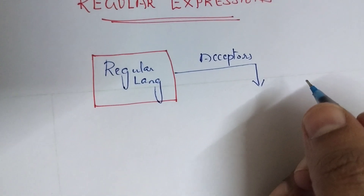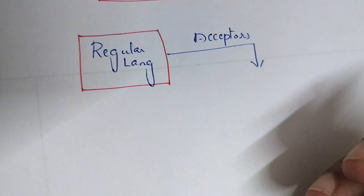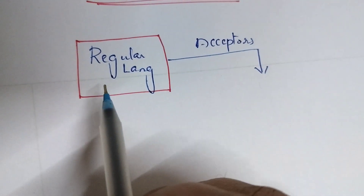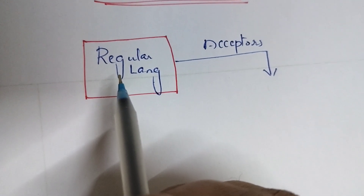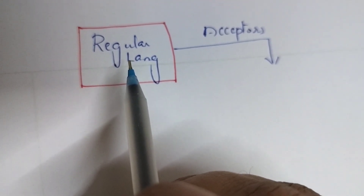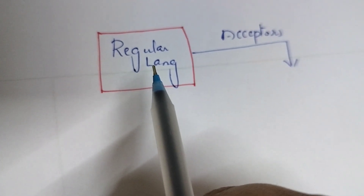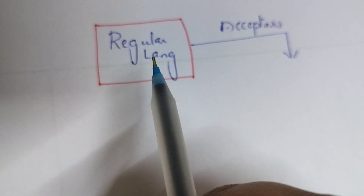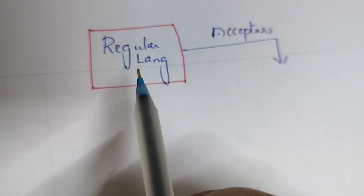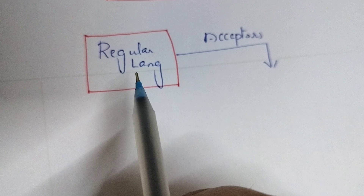We also discussed about languages. A language means a group of strings. In the previous unit we discussed about regular languages — for example, the set of all strings starting with 'a', starting with 'b', not containing 'a' or 'b', ending with 0 or 1, and so on. Those were the regular languages we saw in the previous videos.